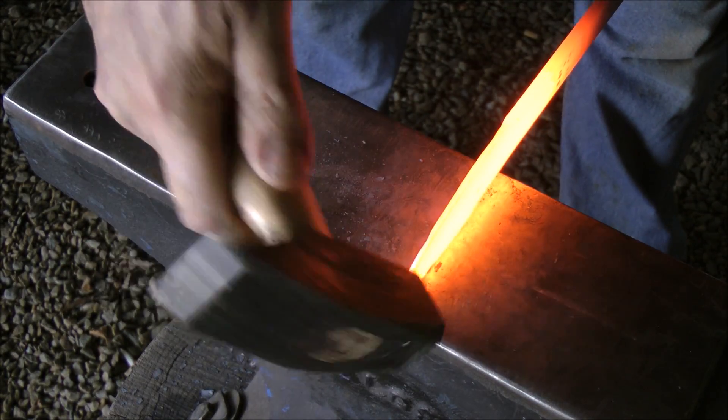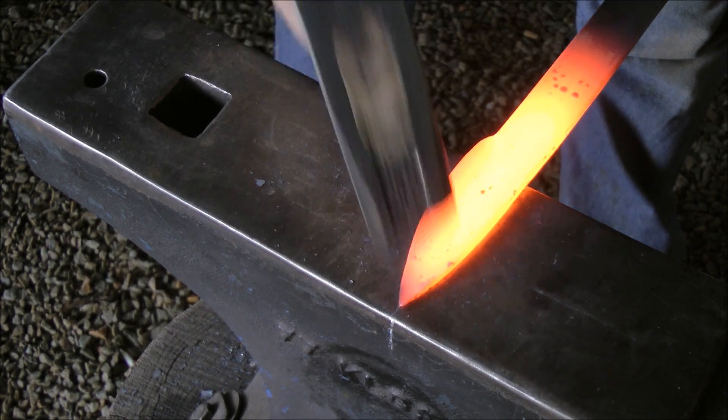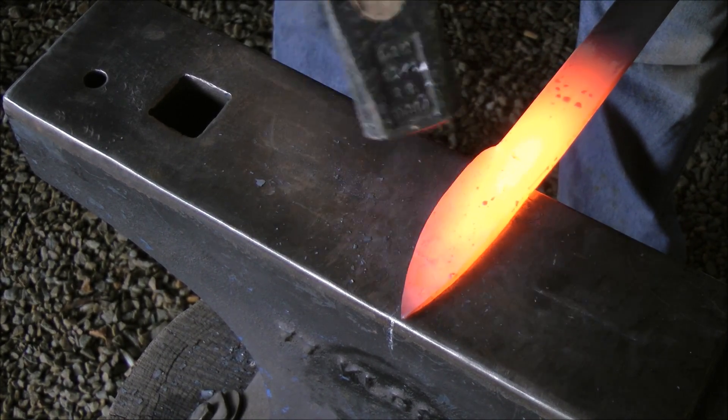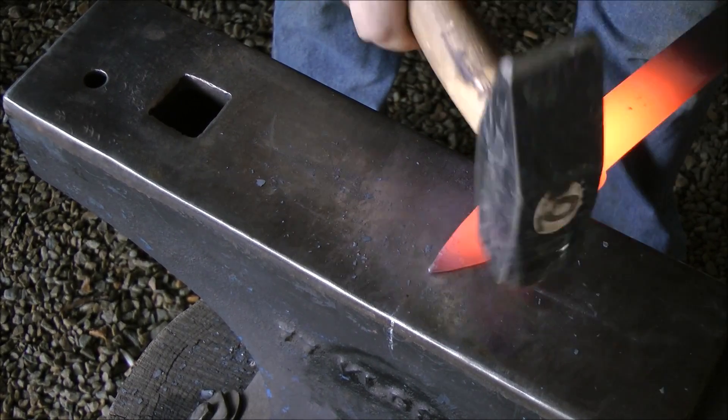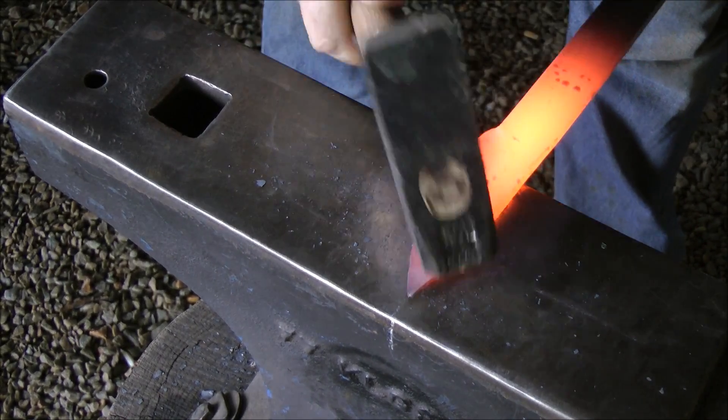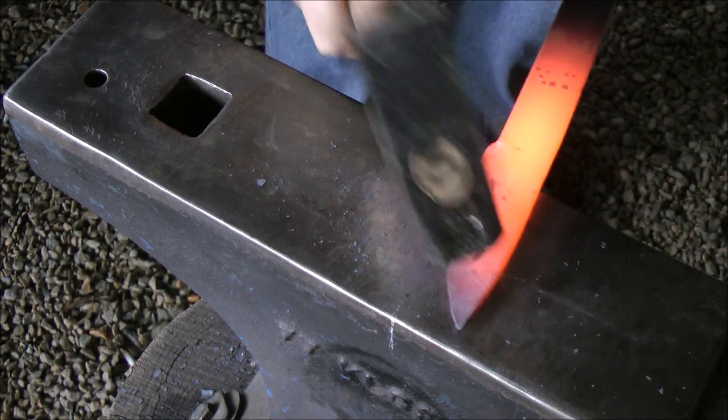Basically, cleaning out, making sure that my edge is the same thickness, just running through that again, before I get to the spine, keeping in mind that the thinner part of the metal will obviously cool down quicker.